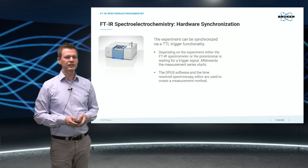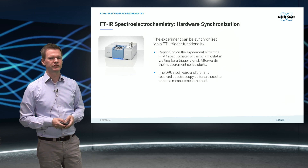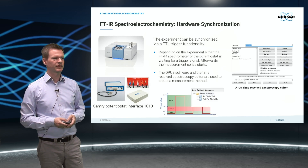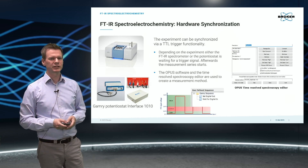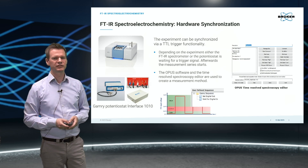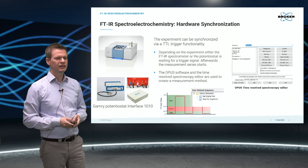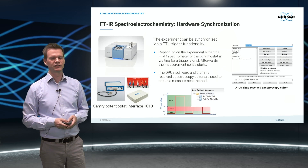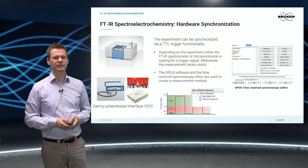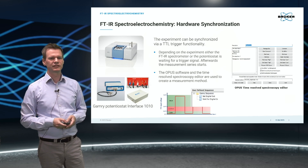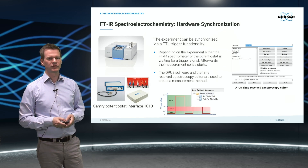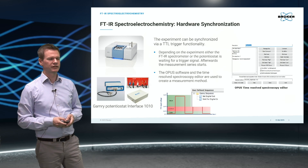A synchronized start of the combined experiment is essential to produce reliable data. Therefore, the FTIR spectrometer and the potential start can be synchronized with TTL trigger signals. This can be realized via the GAMRI sequence wizard and the OPUS time-resolved spectroscopy editor. Both systems are able to send and to receive trigger signals. The synchronization of newly created methods can be easily tested with a demo cell, which is directly available with a potential start.